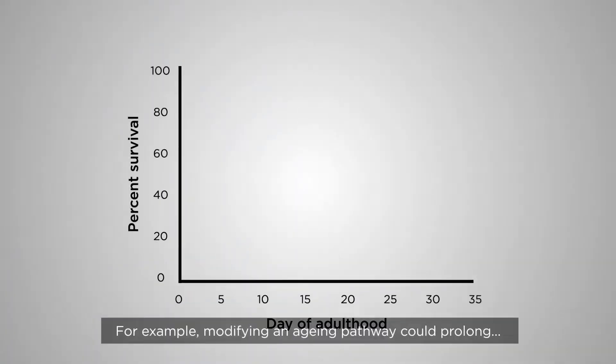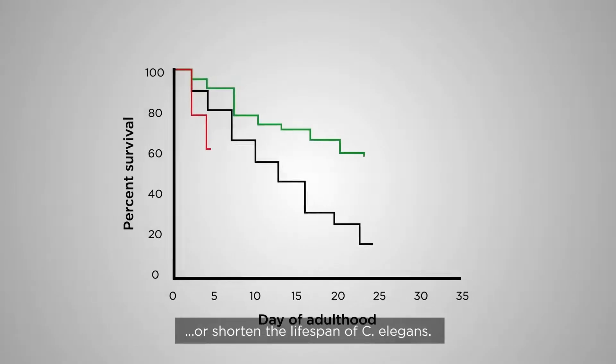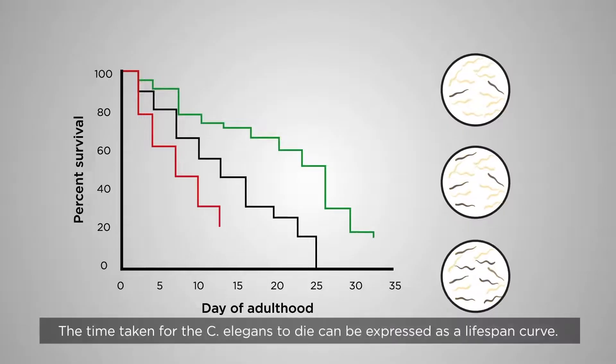For example, modifying an ageing pathway could prolong or shorten the lifespan of C. elegans. The time taken for the C. elegans to die can be expressed as a lifespan curve.